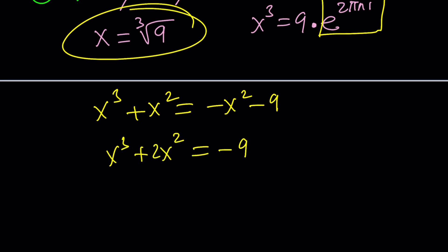x cubed plus two x squared equals negative nine. So, we can kind of think of a number. First of all, notice that x cannot be positive. Why? Because the left-hand side is positive if x is positive, but the right-hand side is negative, regardless of x. So, x needs to be less than zero. First observation.